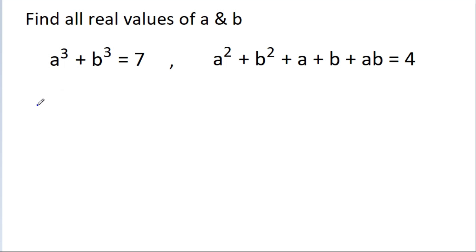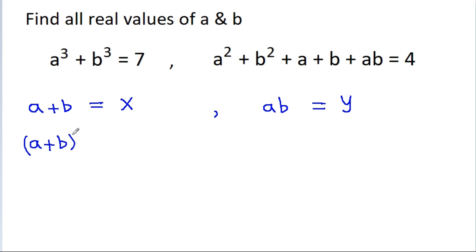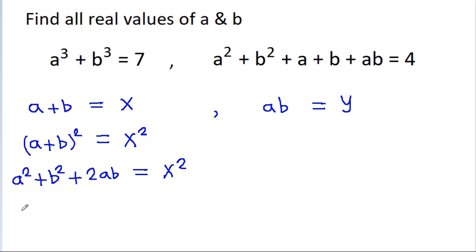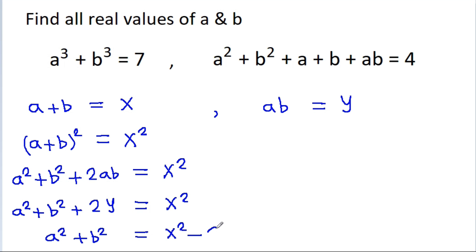So if we take a + b as x and a × b as y, and now if we square both sides, then we get (a + b)² is equal to x², and that is a² + b² + 2ab is equal to x². Since ab is equal to y, we get a² + b² + 2y is equal to x², or a² + b² is equal to x² − 2y.